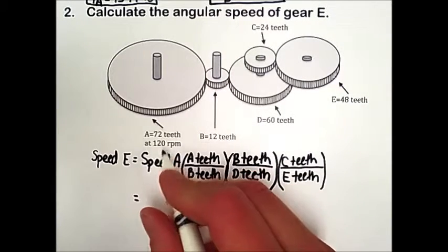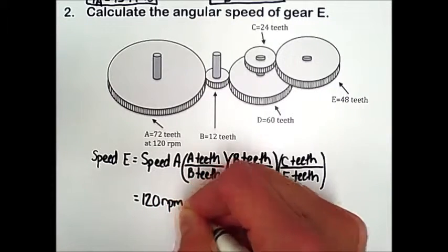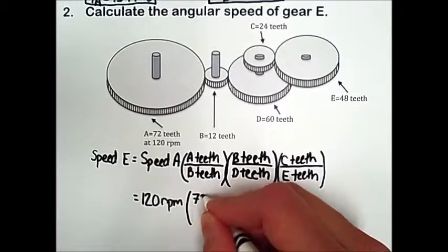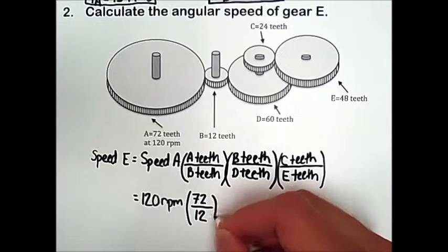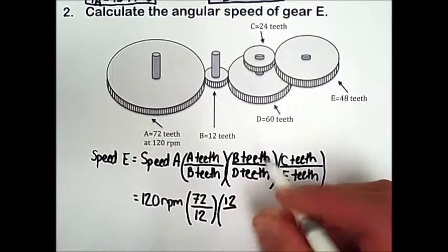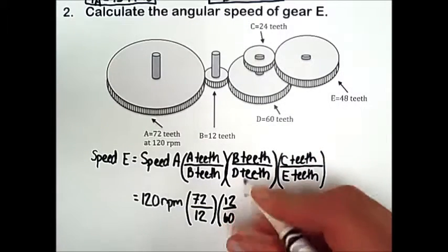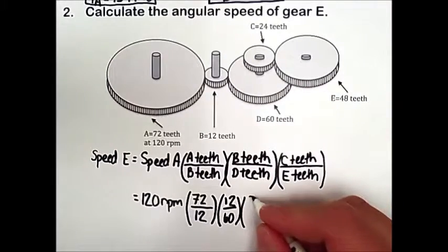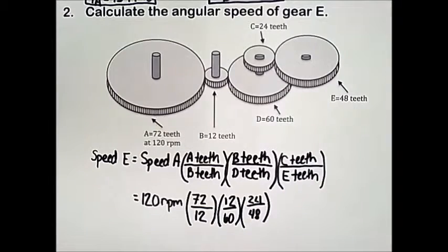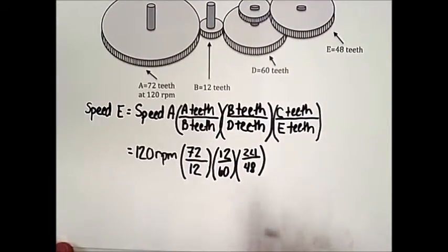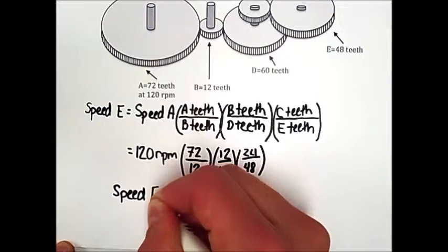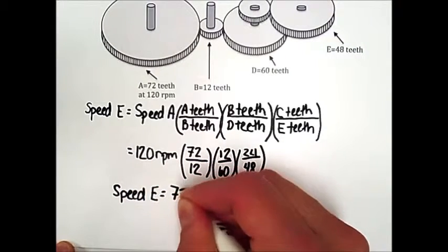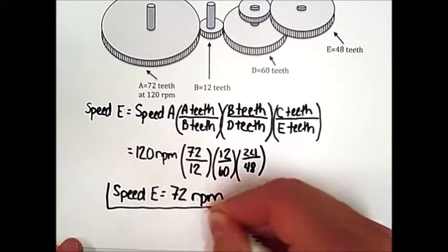Speed A is 120 rpm. A has 72 teeth, B has 12 teeth. Again B has 12 teeth, D has 60 teeth. C has 24 teeth and E has 48 teeth. So when we take 120 times 72 divided by 12, times 12 divided by 60, times 24 divided by 48, we get a speed for gear E of approximately 72 rpm, or 72 revolutions per minute.